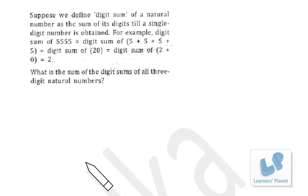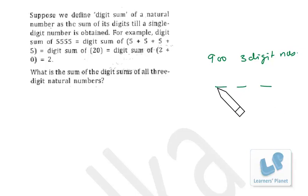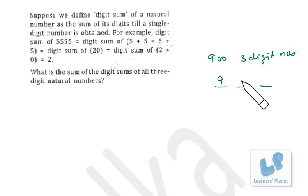Three-digit natural numbers go from 100 to 999 — there are 900 three-digit numbers. For the first place there are 9 choices (1 to 9, not 0), for the second place 10 choices, and for the third place 10 choices, giving 9 × 10 × 10 = 900 three-digit numbers.